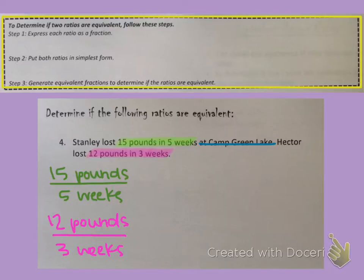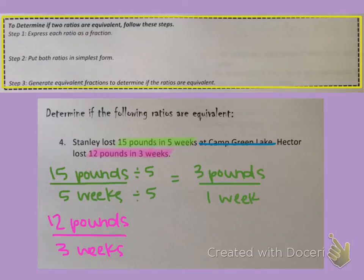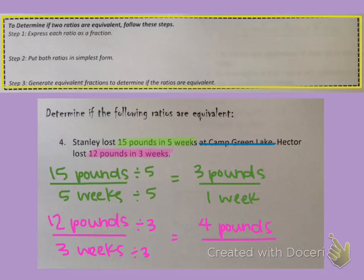Now we need to put both ratios in simplest form. Looking at the first one — 15 pounds in five weeks — I can divide both the top and the bottom by five to get three pounds in one week. Our fraction is in simplest form as three over one, which cannot be simplified anymore: three pounds per week. Then for Hector, we have 12 pounds in three weeks, so I can divide by three on both top and bottom. 12 divided by three is four, so we have four pounds over one week.